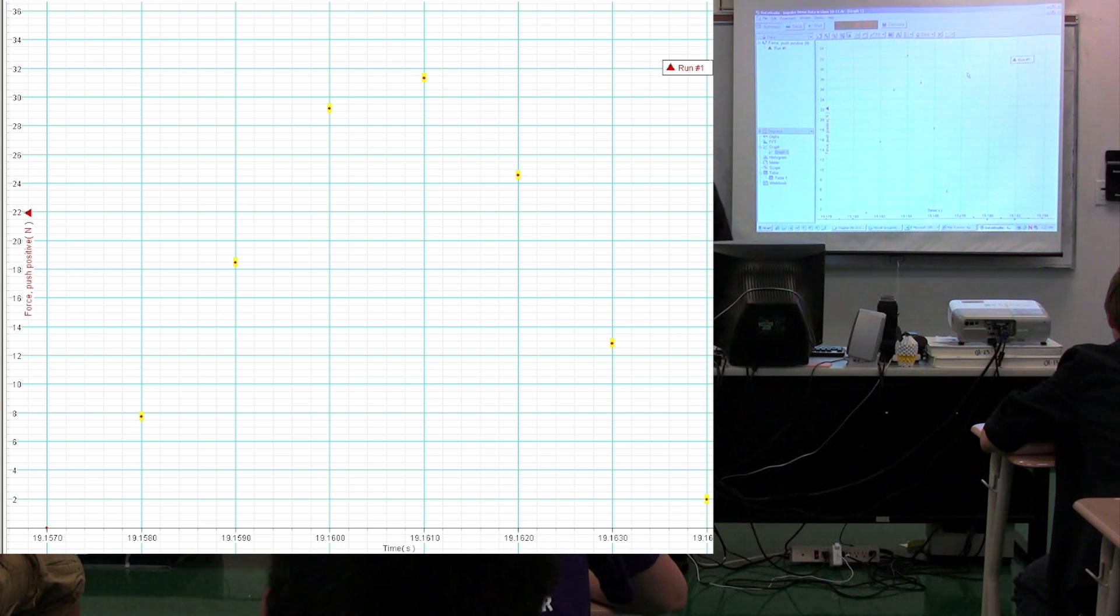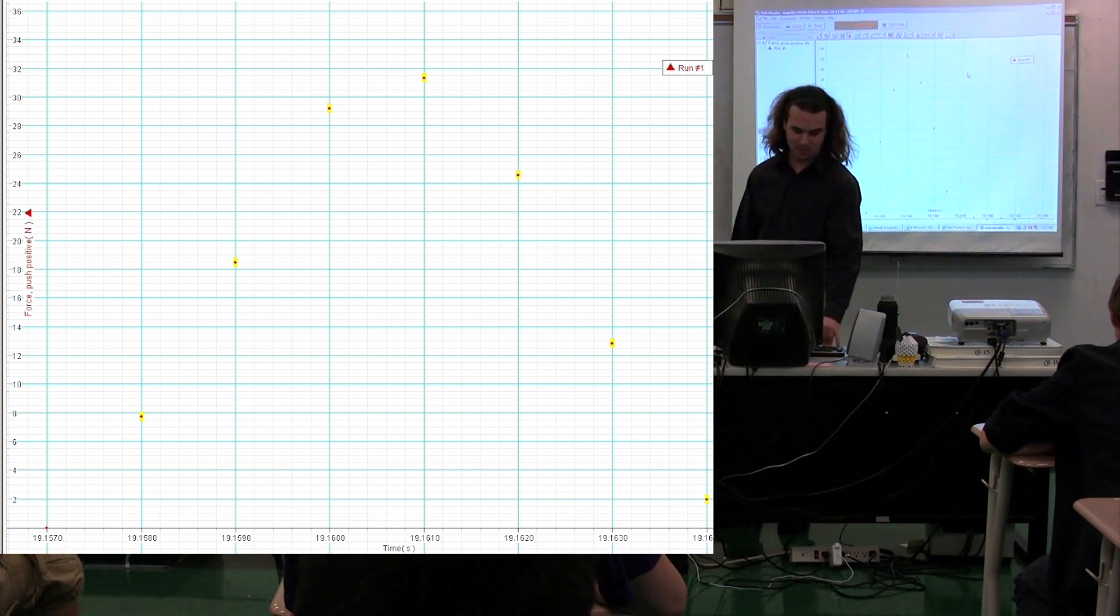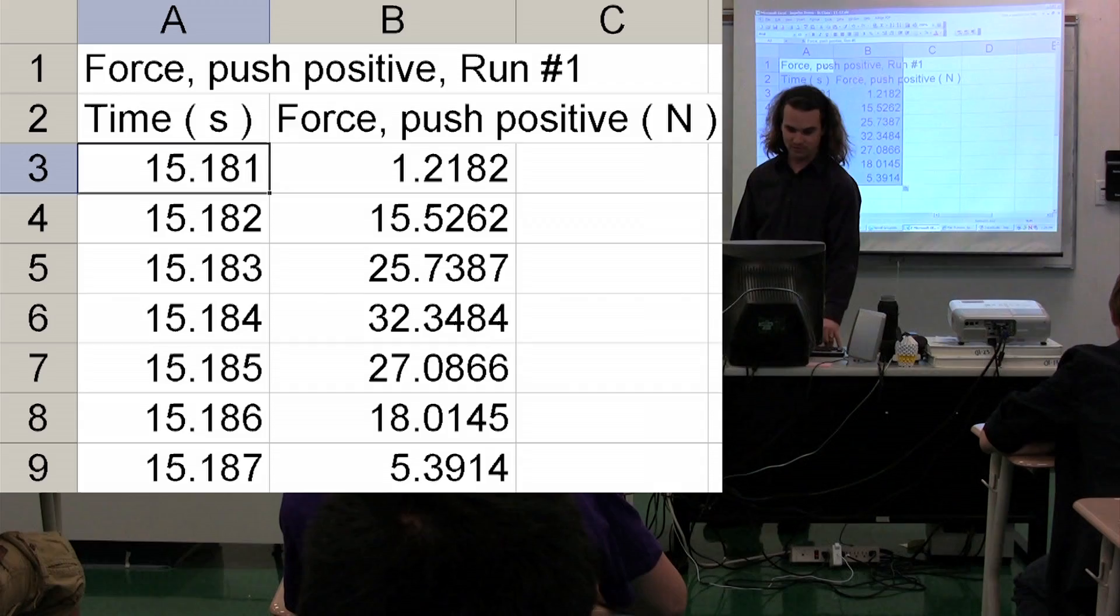This is the easiest way to get data from Data Studio into Excel, and you're going to have to do this in your next lab. I'm going to press Ctrl-C, and then I'm going to press Ctrl-V.